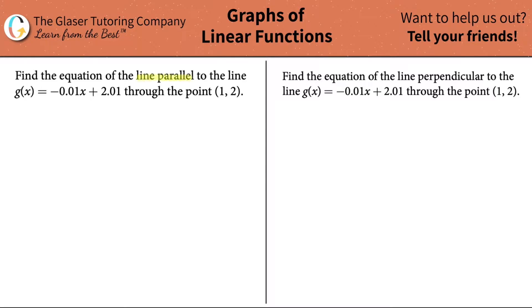Find the equation of the line parallel to the line g(x) equals negative 0.01x plus 2.01 through the point (1, 2). First thing is, you know how I feel about this notation. Change the g(x) to just y. So y equals negative 0.01x plus 2.01.